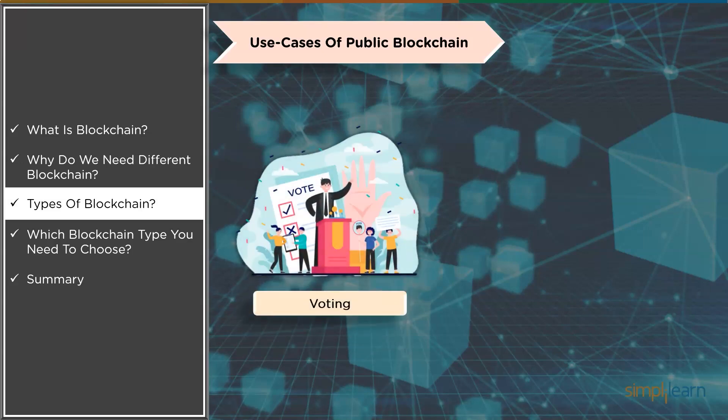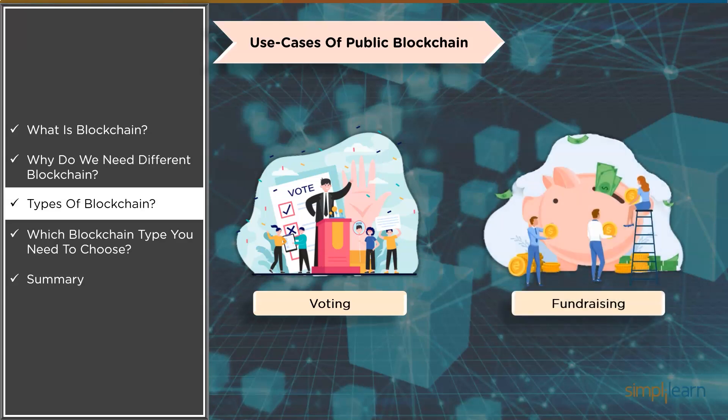Now let's look at some use cases of public blockchain. First is voting — governments can use a public blockchain to conduct voting, ensuring openness and trust. Second is fundraising — businesses or initiatives can use the public blockchain to improve transparency and trust. Now let's move on to the next blockchain in the list, which is private blockchain.